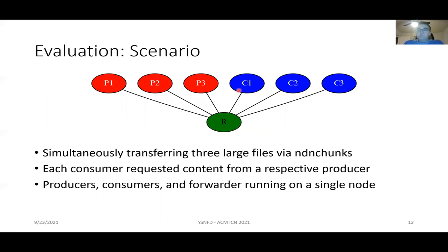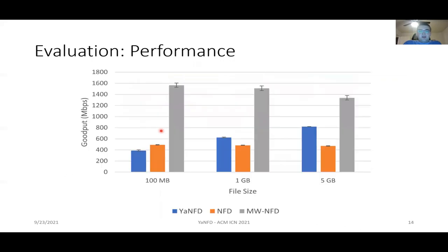To evaluate our forwarder, we simultaneously transferred three large files via NDN chunks, with three producers and three consumers running on the same node as a software forwarder. Each consumer requested different content — C1 from P1, C2 from P2, C3 from P3. We found that NFD's performance was pretty constant across all file sizes — 100 megabytes, one gigabyte, five gigabytes. Meanwhile, Multi-Worker NFD performed the best due to the use of 100% CPU polling and multiple forwarding threads, though performance decreased slightly as file size got larger, likely due to losses.